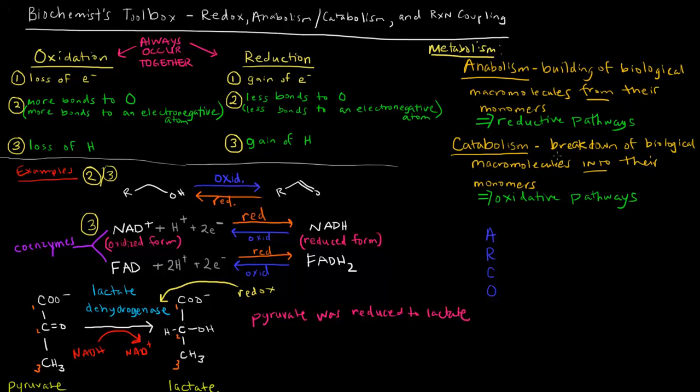And catabolism is the opposite. It's the breakdown of biological macromolecules into their monomers. So it would be like breaking proteins into amino acids or polysaccharides into monosaccharides. And these are oxidative pathways. So how do I remember that? I just remember ARCO. ARCO is actually like a gas station. Anyway, it helps me remember. So I remember anabolism is reductive, anabolic pathways and reduction go together, and then catabolism and oxidation go together. Anabolic pathways usually involve the reduction of a compound, whereas catabolic pathways involve oxidation of a particular compound.